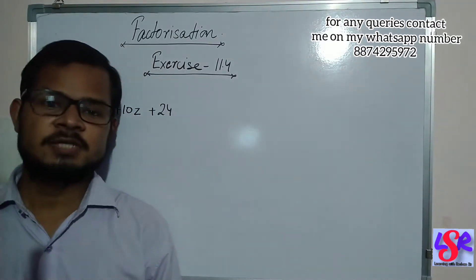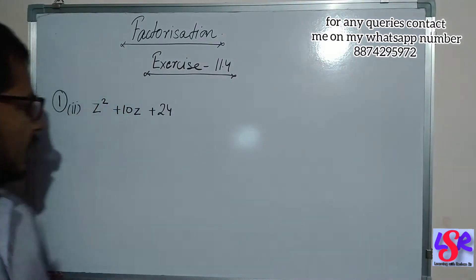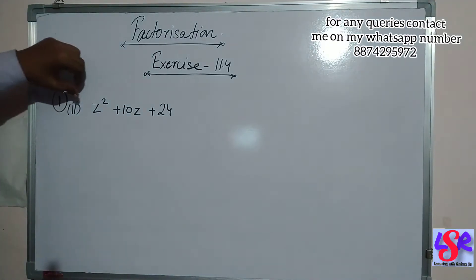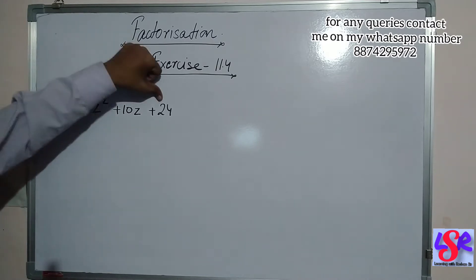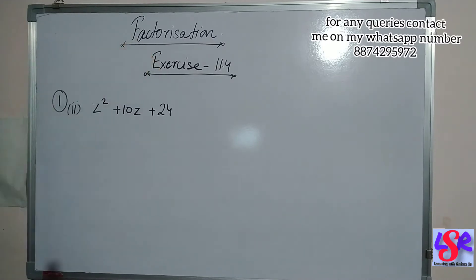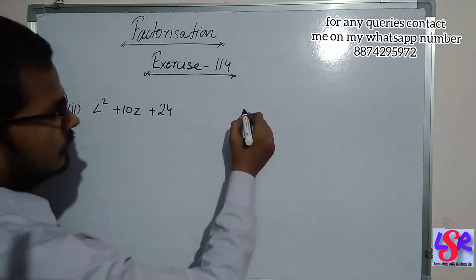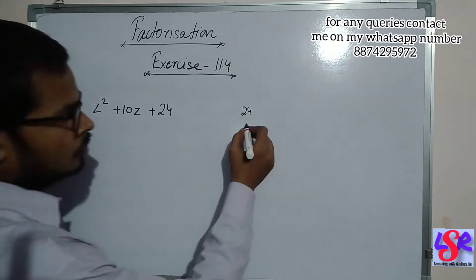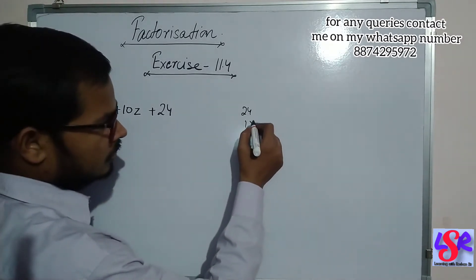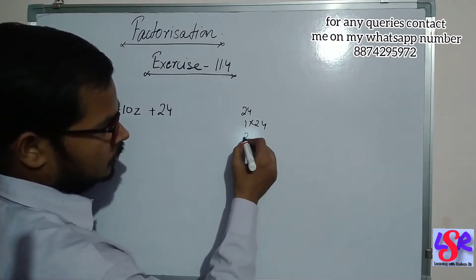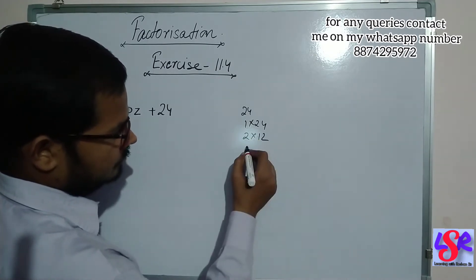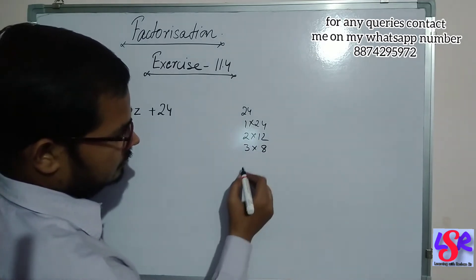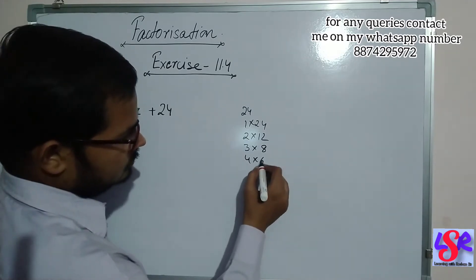Now let's go with question number one, second part. Here we are having z square plus 10z plus 24. We are going to multiply the coefficient of z square with 24, and on doing so we get 24. The factors of 24 are 1 into 24, 2 into 12, 3 into 8, 4 into 6.